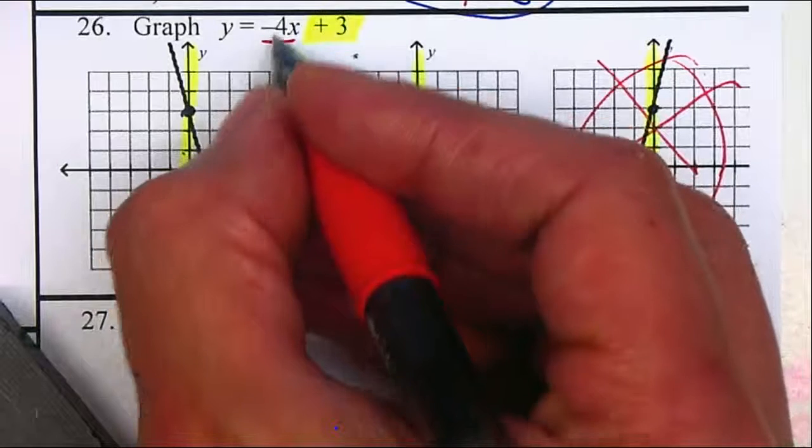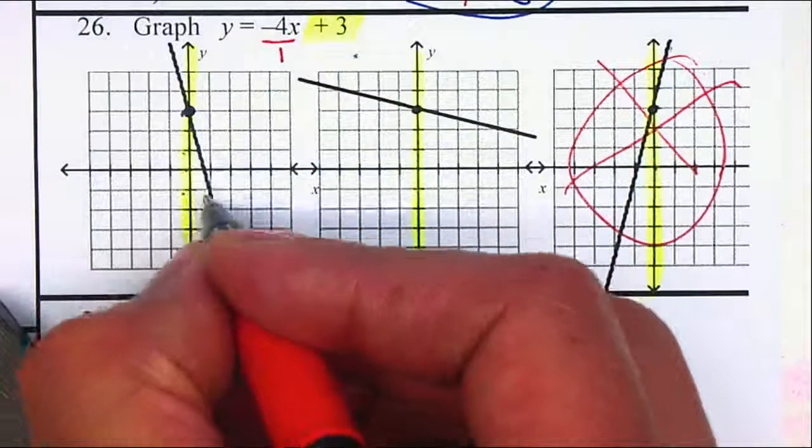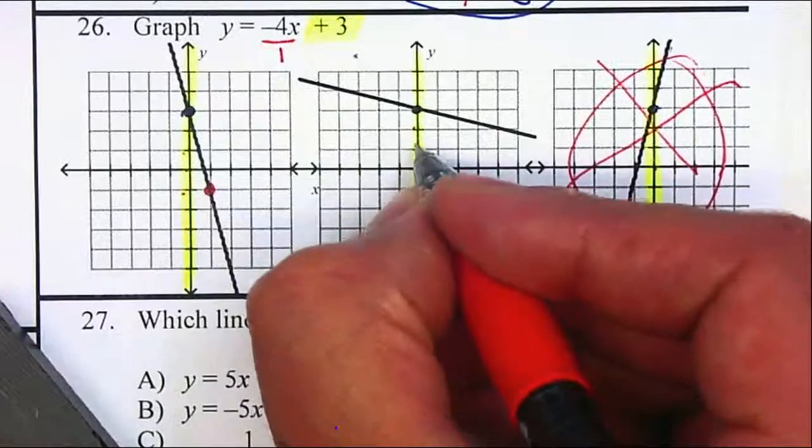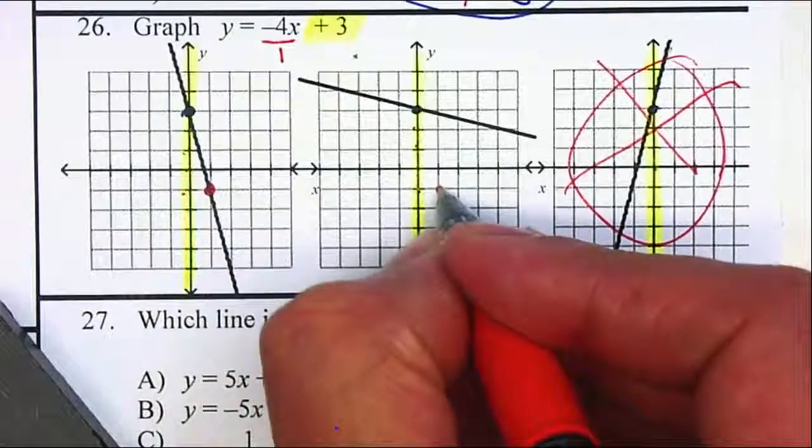My slope is down 4 and over 1. 1, 2, 3, 4 and over 1. That one's fine. 1, 2, 3, 4 and over 1. That one's not correct.